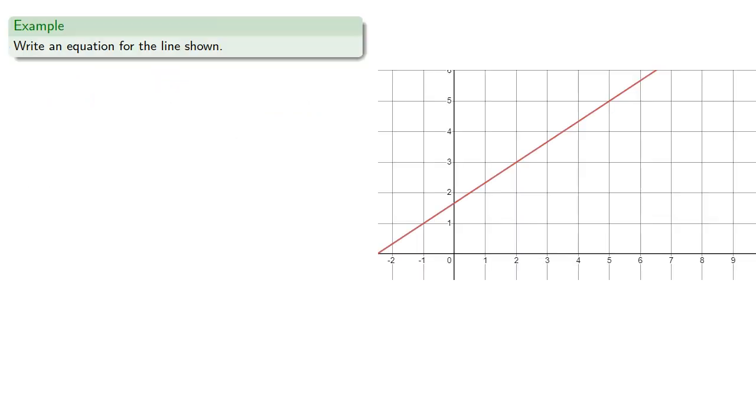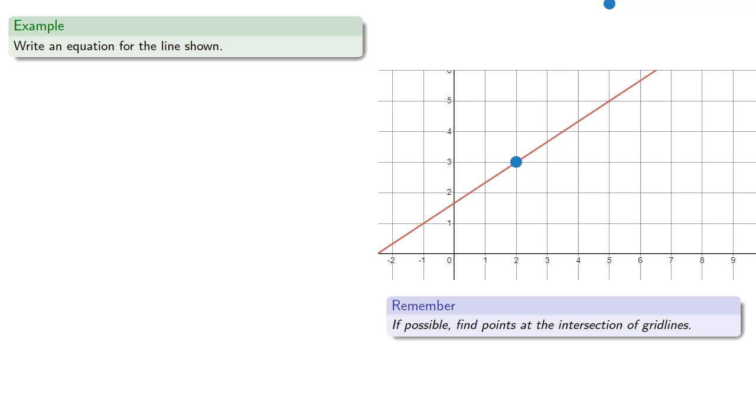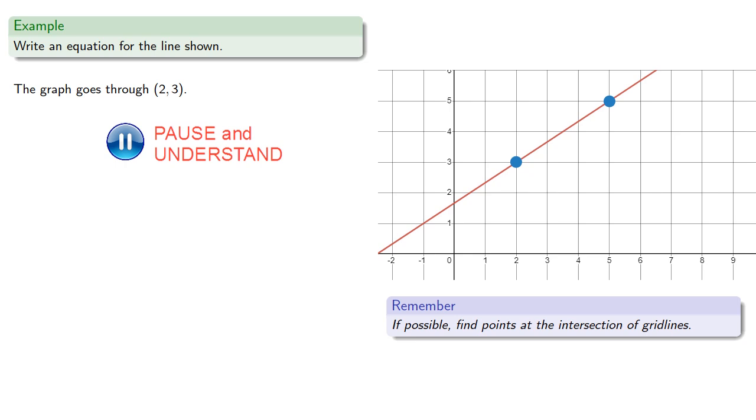For example, let's try to write the equation for the line shown. So again, if possible, we'll find points at the intersection of grid lines. Our graph goes through the point (2, 3) and it also goes through the point (5, 5).